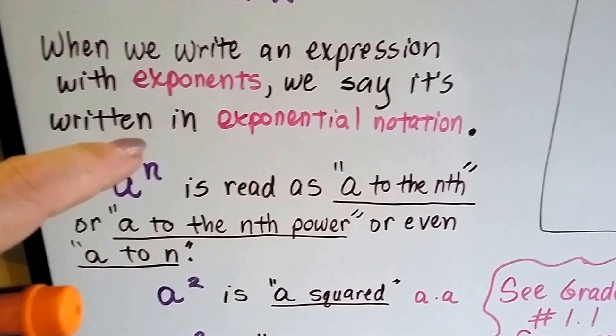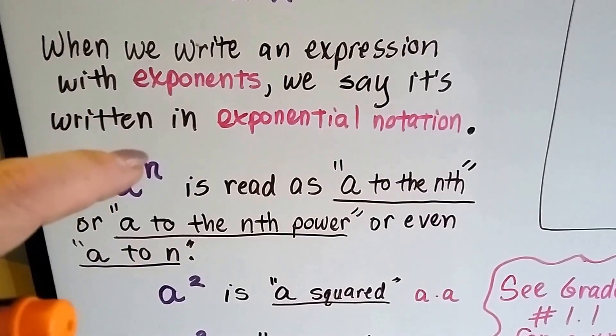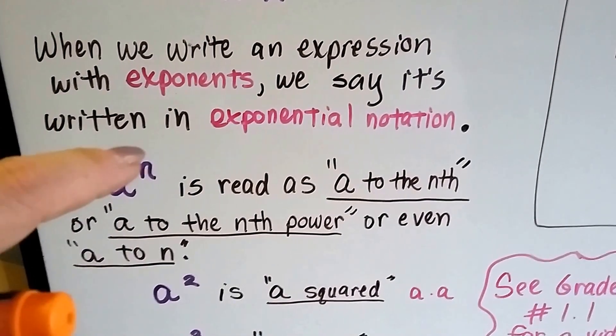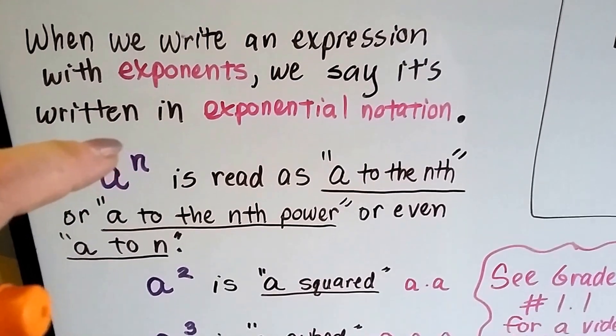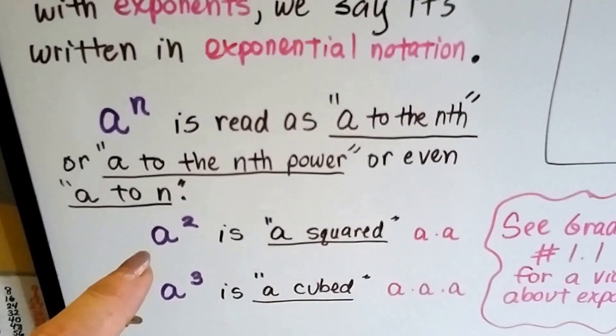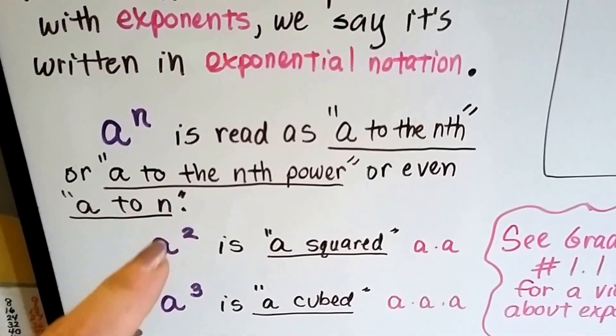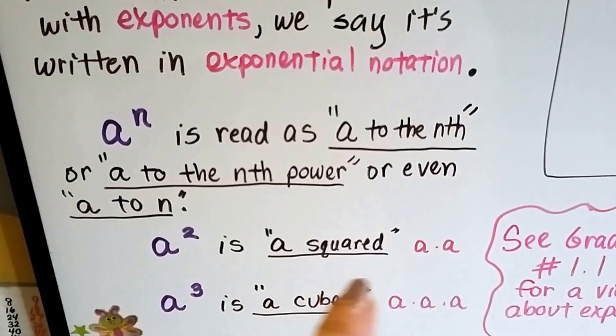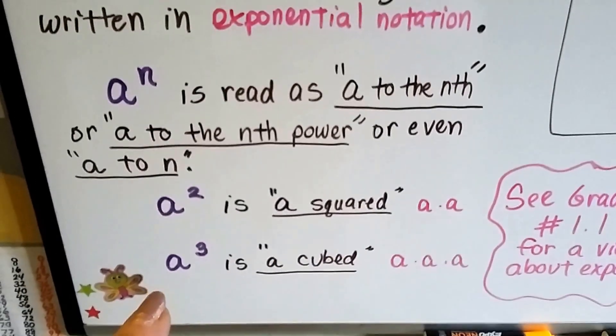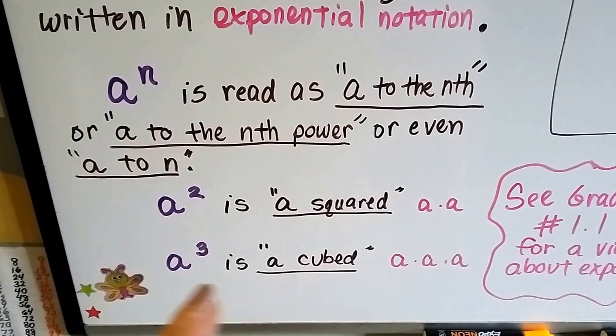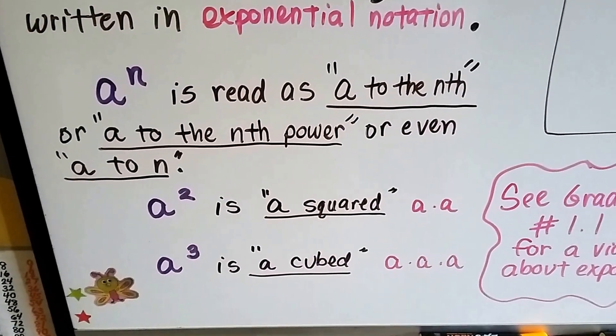a to the n power is read as a to the nth or a to the nth power or even a to the n. And it just means that the variable is taking place of the unknown number. a squared is a times a. And if it had a little 3, it would be cubed, like a times a times a.